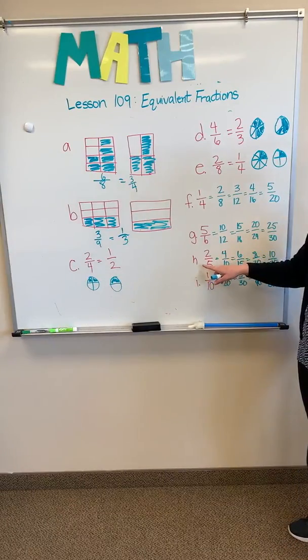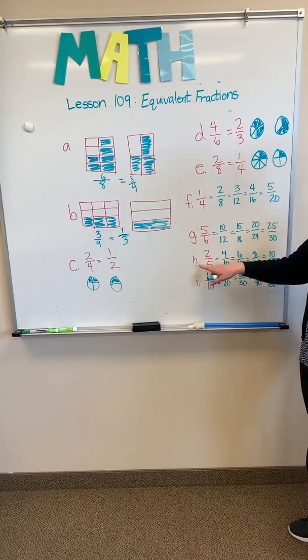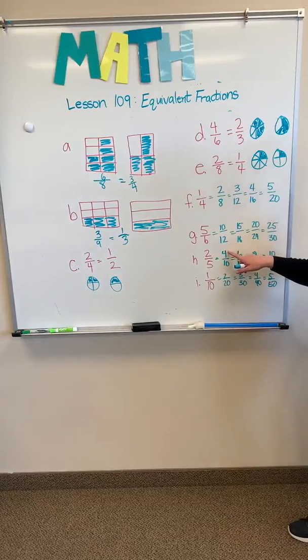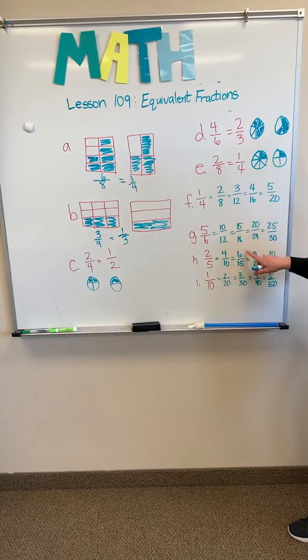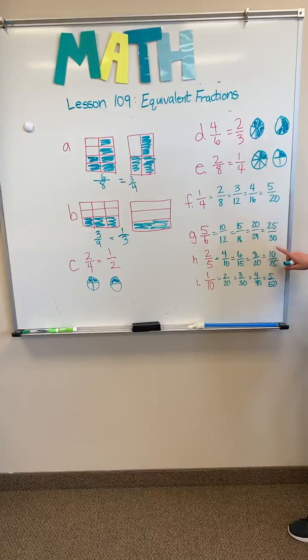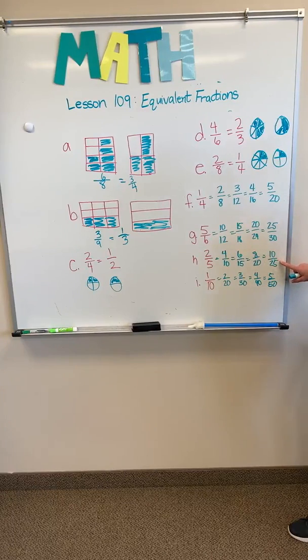The answer for H with 2 fifths—the equivalent fractions for 2 fifths: 4 tenths, 6 fifteenths, 8 twentieths, and 10 twenty-fifths.